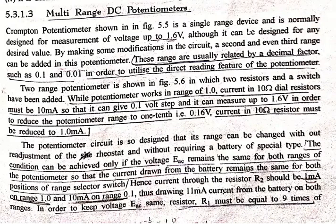Good morning students. In the previous lecture we studied the Crompton potentiometer which is a single range device normally used for measurement of voltage up to 1.6V. So that is a kind of limitation.